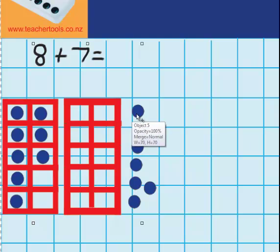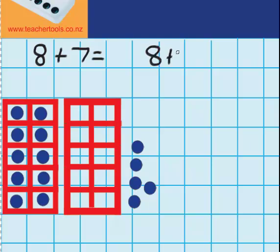First of all I'm going to fill up this tens frame. So, there we go, I've added 2 in there so far. So I'm just going to record what I've done so far. I've done 8 plus 2, and you can see that's taken me to 10.